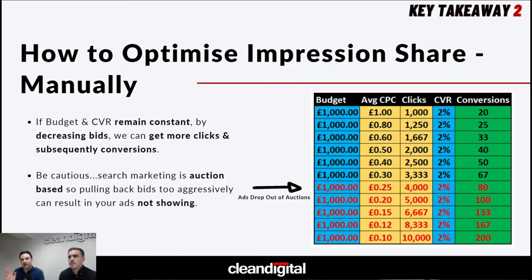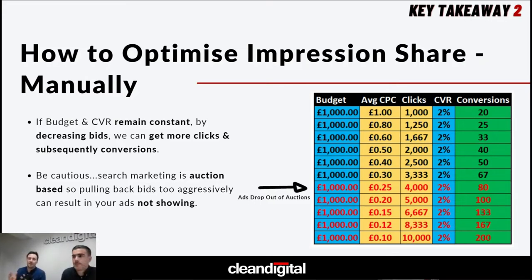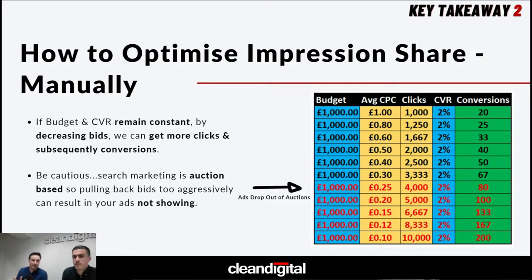With a fixed budget of £1,000 per month on key terms, your conversion rate is stable. Initially when launching you may look at £1 bids, but over time you can pull those back and make that budget go a lot further. You're getting more clicks which, with that stable conversion rate, allows you to get more conversions. The efficiency gains pretty quickly allow you to get a lot more conversions than you initially started with. Be cautious though — Google Ads and Microsoft Ads are auction-based, so pull back bids incrementally to ensure you're not dropping out of auctions completely.